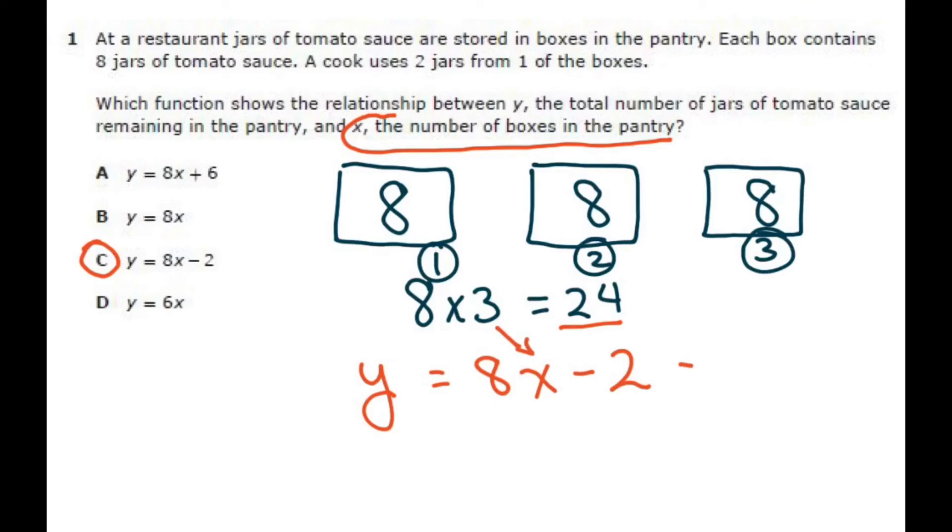Now if you chose this one, that would mean you would add 6 jars. And again, B is if you don't take anything away or add to it. And D, if you made that mistake, that is because you probably took 8 minus 2, but that doesn't make sense if you draw a picture and just use real-life situations.